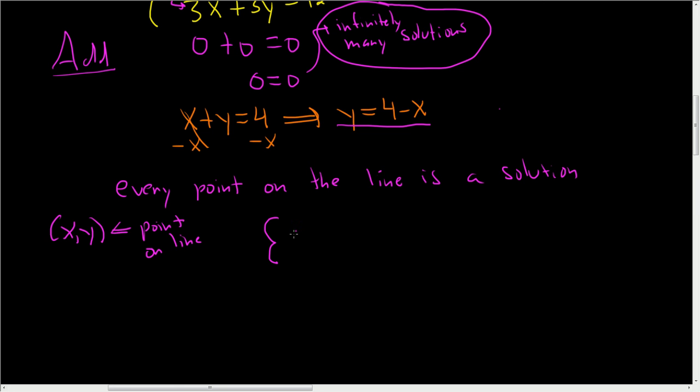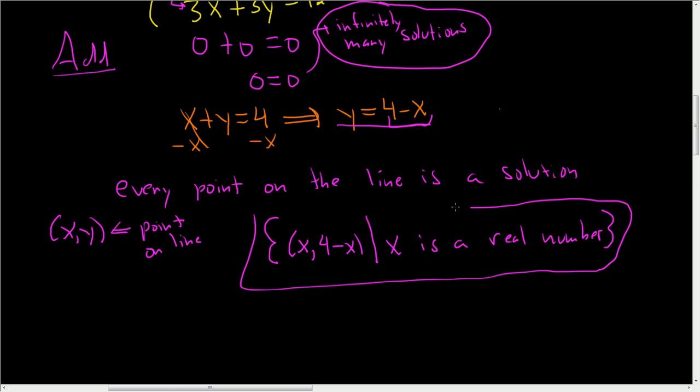So it's the set of all (x, y), but it's not y, it's four minus x. So (x, four minus x) such that x is a real number.